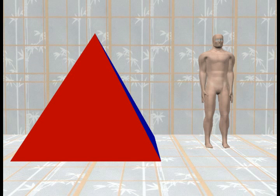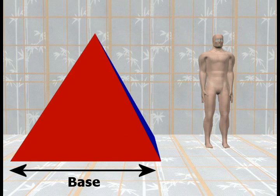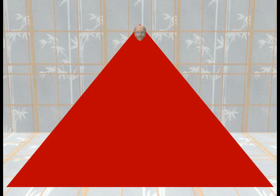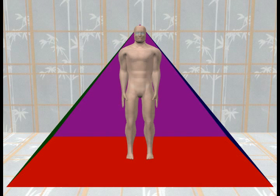Here is a picture of a human body and a pyramid. The pyramid is the same height as a human body, with a base that has been made large enough to accomplish the goals of this video. The next picture shows the pyramid and the human body both moved so they have the same center. The pyramid obscures all of the body except for part of the head. In order to see the entire relationship between the human being and the pyramid, the front of the pyramid is made transparent in this picture.